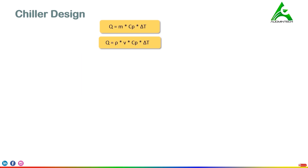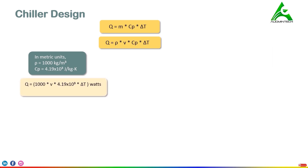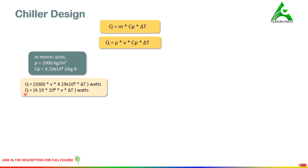Now we'll understand more details related to this equation in metric units. The density of water is 1000 kg per meter cube and the Cp value of water is 4.19 × 10³ joules per kg kelvin. Substituting rho and Cp into the main equation gives: 1000 × V × 4.19 × 10³ × delta T, with the final answer in watts (joules per second). Multiplying the constants, we get a direct formula: if we have volumetric flow rate and temperature difference in SI units, we can use this formula to calculate q.